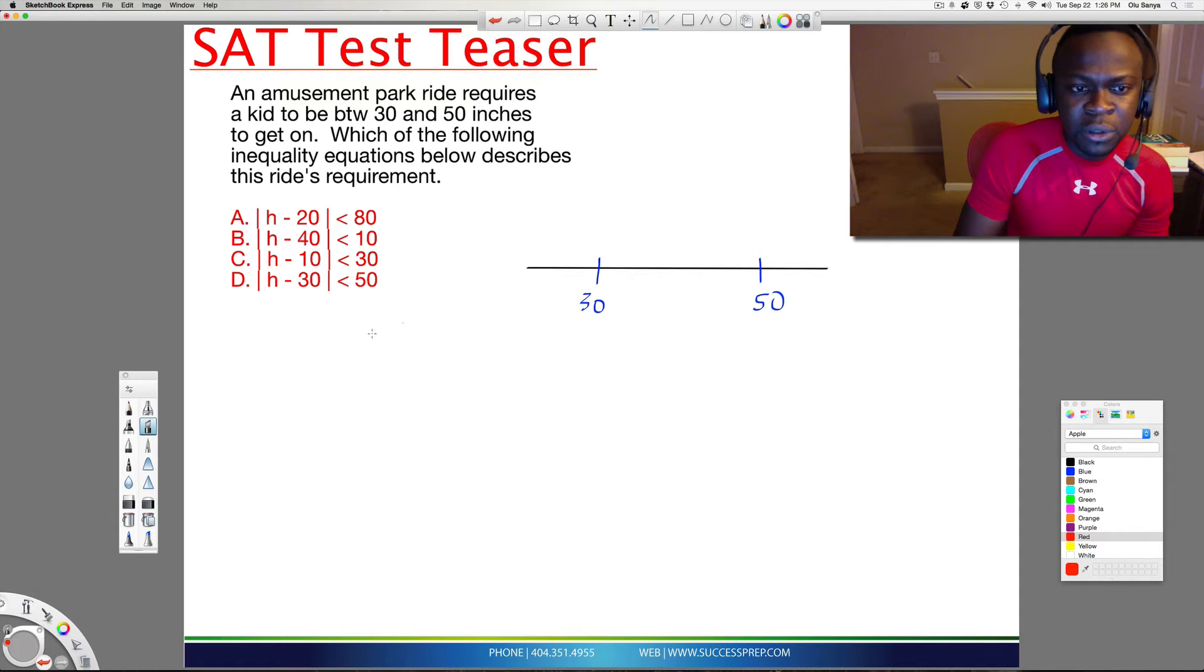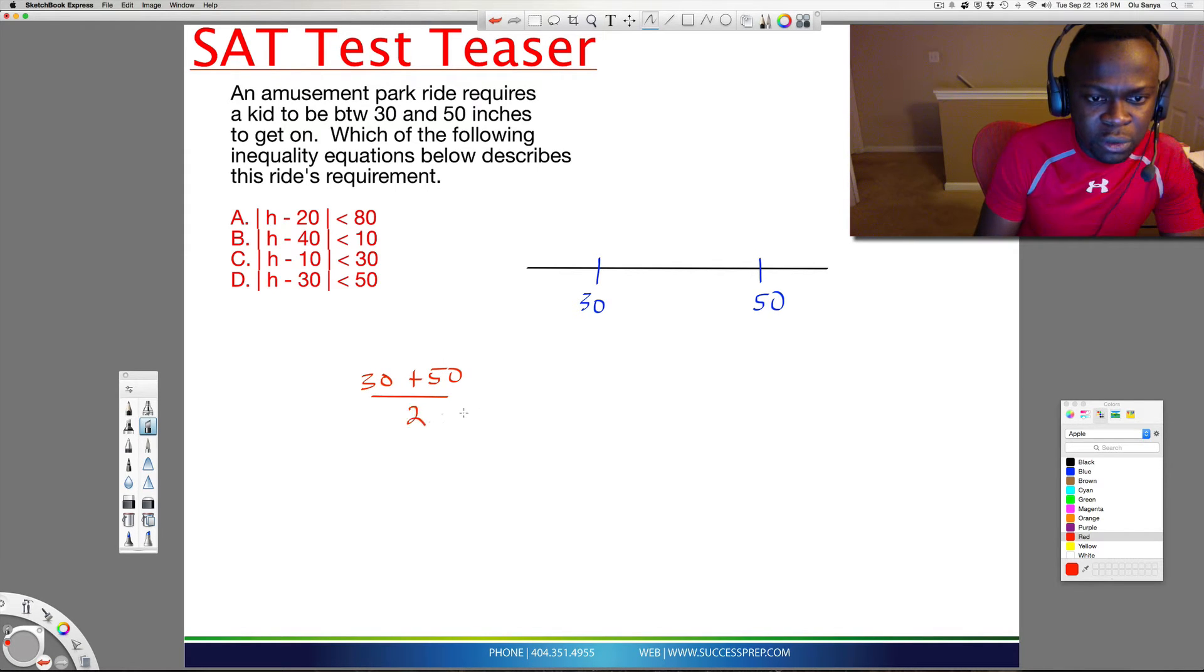You need to think about doing the average of this 30 and 50. So it's going to be 30 plus 50 over 2. Just the average of that. And that's going to be 80 over 2, which is 40. Which tells us that the average there is going to be 40. So that's the first thing you do.